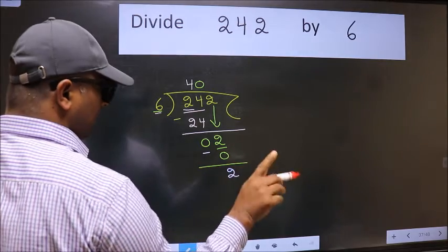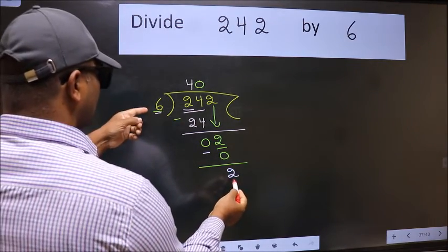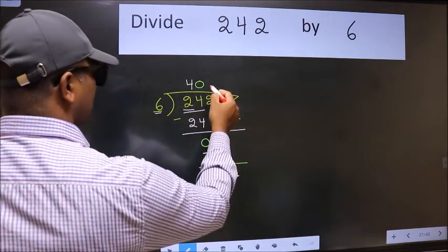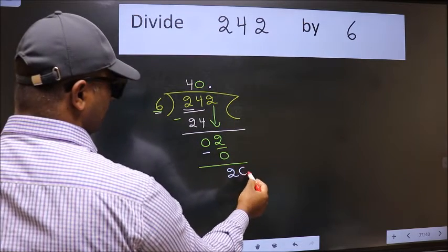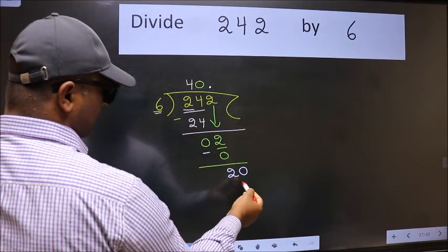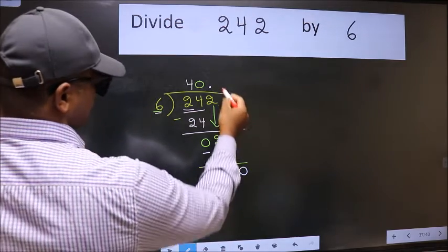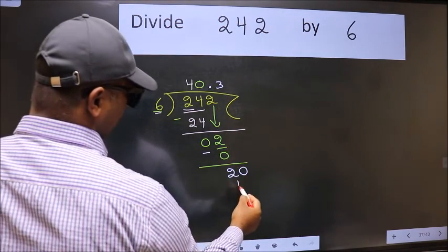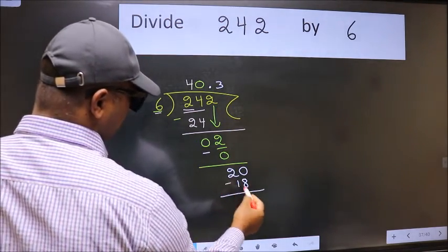Over here we did not bring any number down, and 2 is smaller than 6, so now we can put the decimal point and take 0. So 20—a number close to 20 in the 6 table is 6 times 3 is 18. Now we subtract.